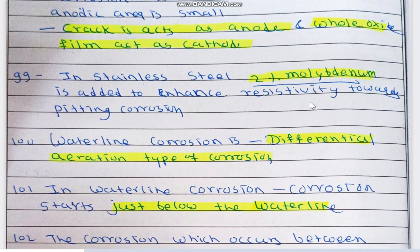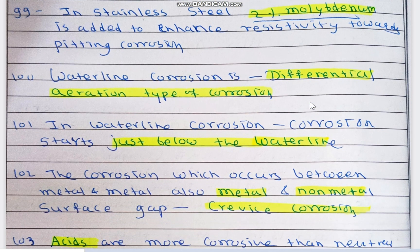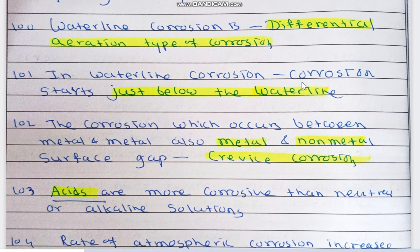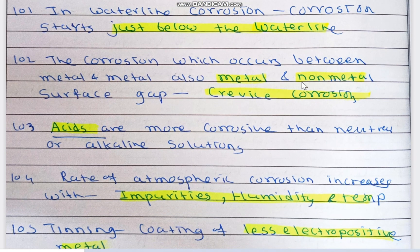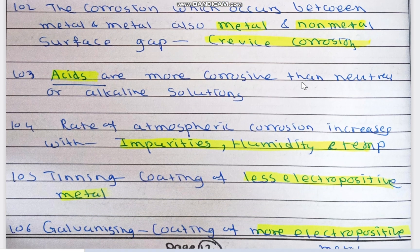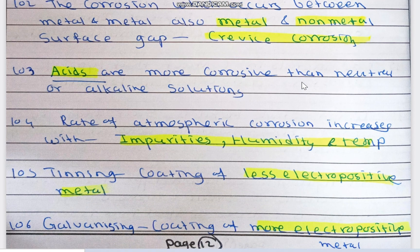In stainless steel, 2% molybdenum is added to enhance resistivity towards pitting corrosion. Waterline corrosion is a differential aeration type of corrosion — different access to oxygen causes waterline corrosion, which starts just below the waterline. The corrosion which occurs between metal-to-metal or metal-to-non-metal surface gaps is known as crevice corrosion.